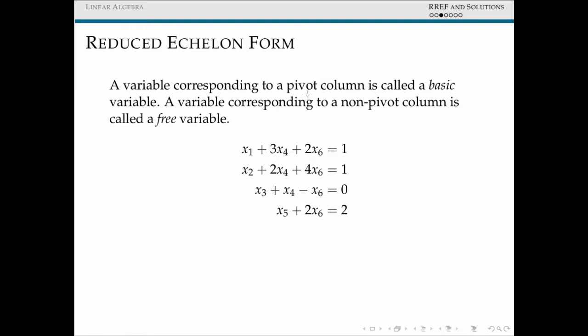So a variable that corresponds to a pivot column is going to be called a basic variable. A variable corresponding to a non-pivot column is called a free variable. And this notation is going to come out of our free variables, x4 and x6. It turns out once we're able to pick some value for these non-pivot or free variables, that constrains our other basic variables by whatever value this x4 and x6 take on.